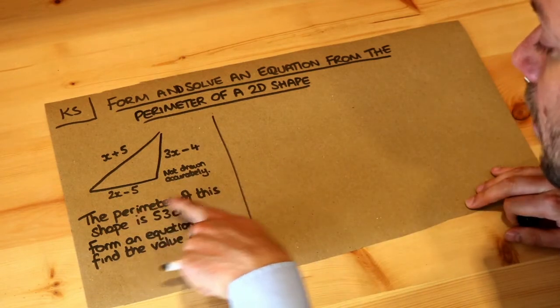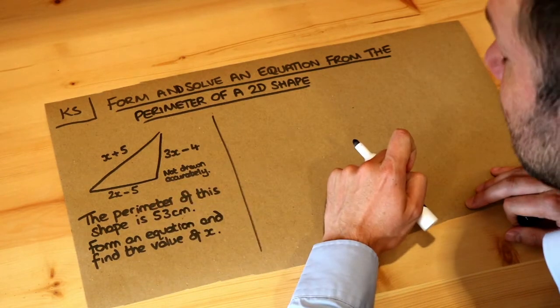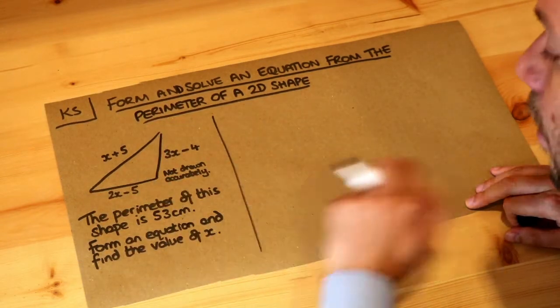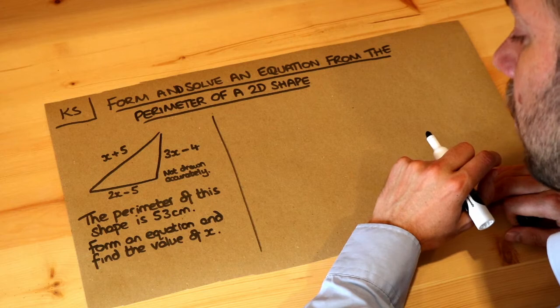Now we're told the perimeter of this shape is 53 centimetres, and remember that perimeter means the total of the lengths of the shape, and we want to form an equation to find the value of x.